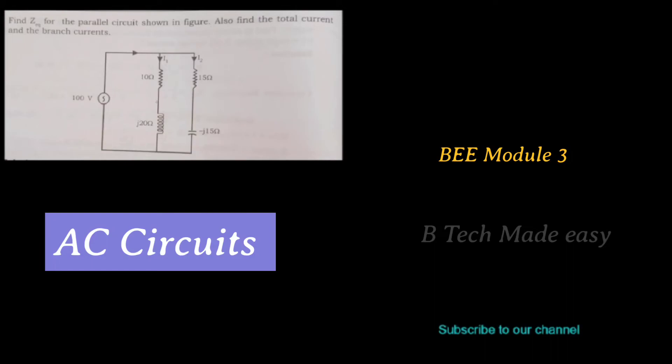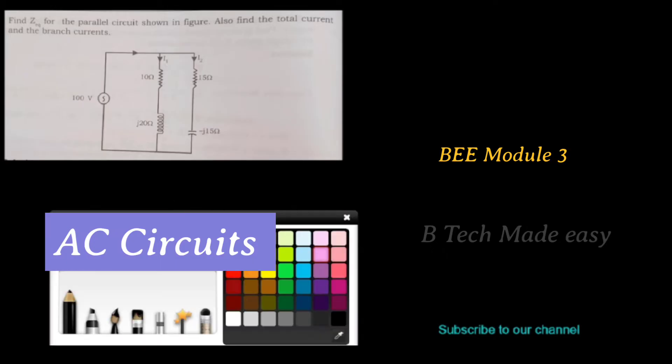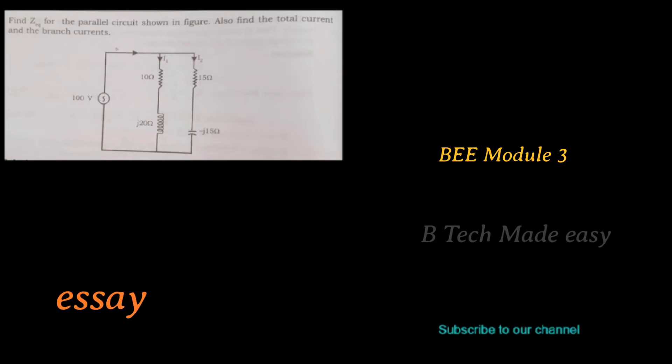For the parallel circuit shown in the figure, we have to find the equivalent impedance. We also need to find the total current and the branch currents.